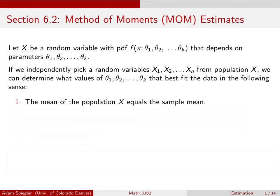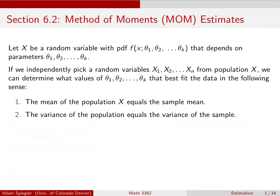That might not be enough, so we also require that the variance of the population equals the variance of the sample. That way both the center and the spread of the sample are accurately reflected by these theta values. For a normal distribution this is sufficient, since the mean and variance totally determine it.